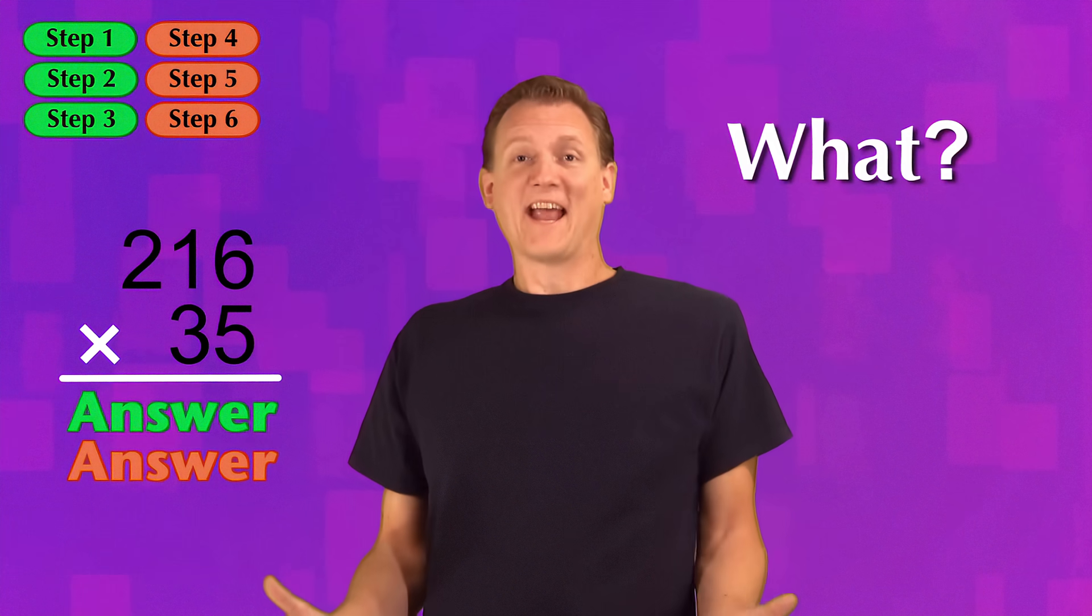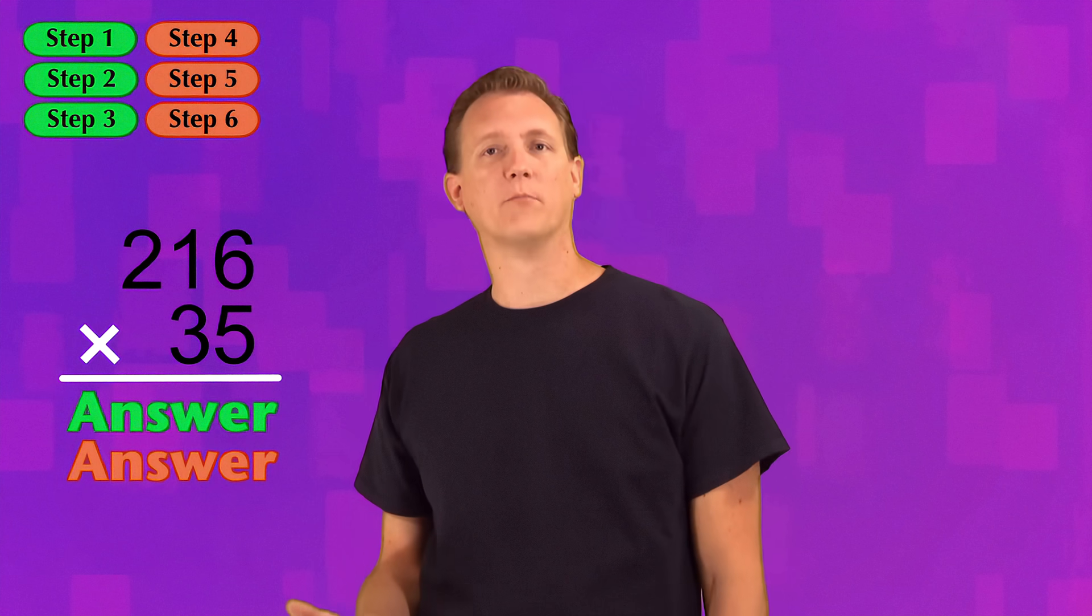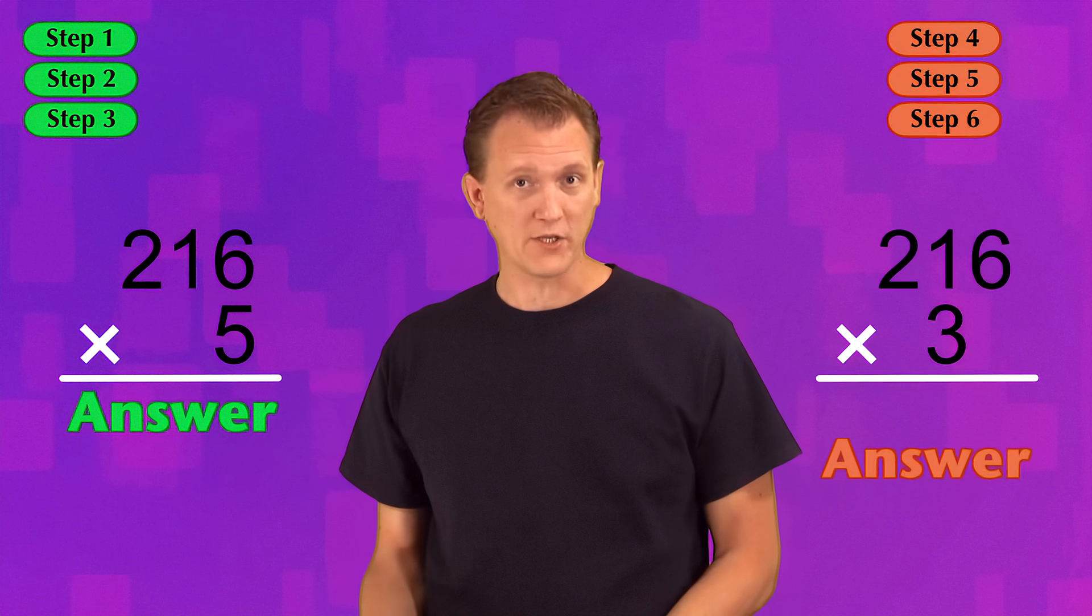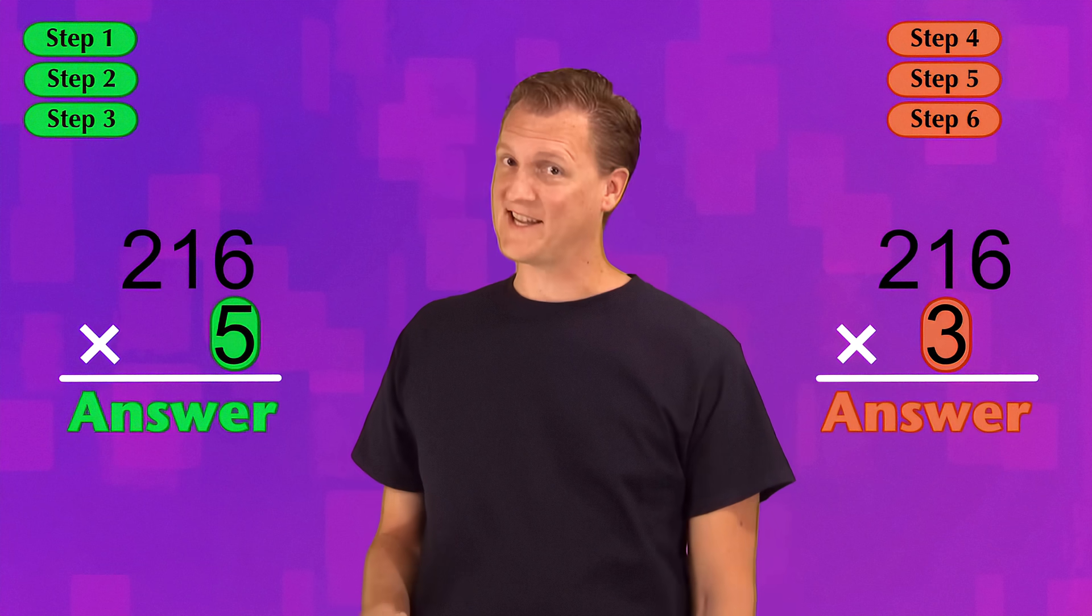What? How can we have two different answers for the same problem? Now don't panic. The different answers are just what you get from doing the multiplication procedure for each digit of the bottom number separately. In fact, it's kind of like we're pretending we have two separate multiplication problems that each have a one-digit bottom number. Which is nice, because I kind of like pretending.